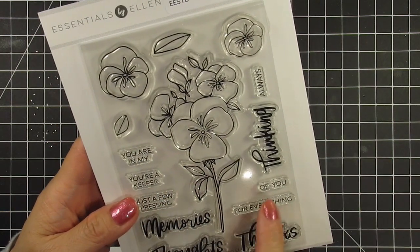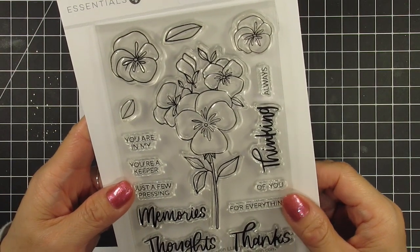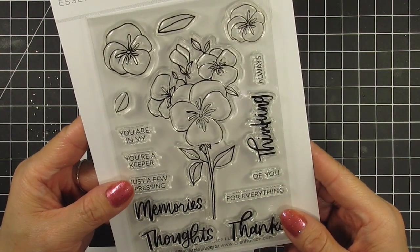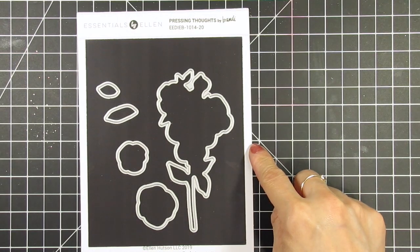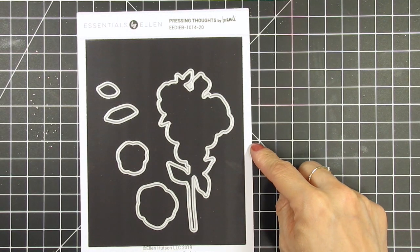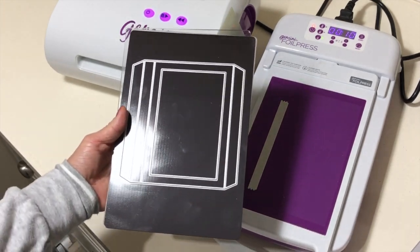I love the four scripted words in Brandy's handwriting and the six secondary sentiments in classic fonts make this a great set for sending thanks and encouraging thoughts to family and friends. Of course there's a coordinating die set. Let's get started on my project.